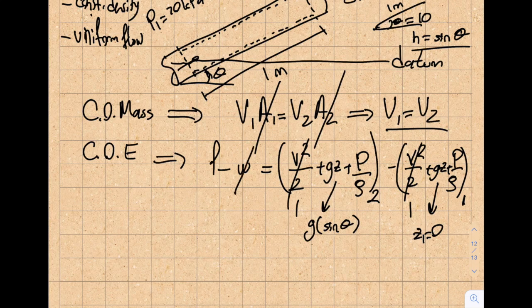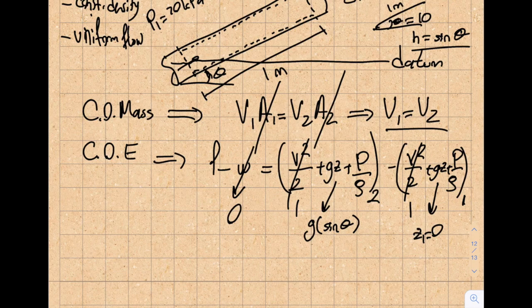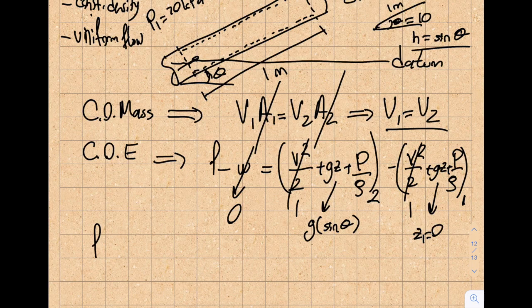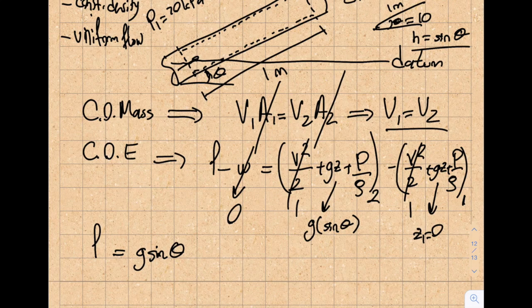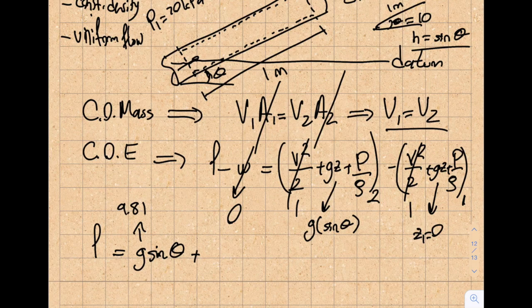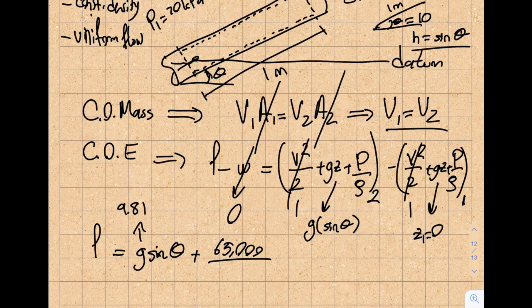Then I got myself a nice relationship. So here is what it looks like. G times sine theta, right? Plus G is 9.81, and the pressure 2. The pressure 2 is 65,000 divided by, let's say, 1,000.